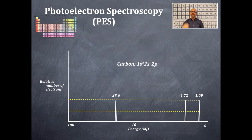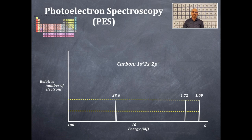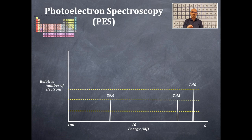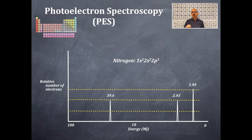Next is carbon: 1s2, 2s2, 2p2. Notice the height of all these peaks is 2. There's a shift in energy with the 1s2 electrons shifted closer to the nucleus — higher energy, harder to remove at 28.6 megajoules. The 2s2 and 2p2 are grouped together because they're relatively close in energy. Then nitrogen: 1s2, 2s2, 2p3. The peak at 39.6 is the 1s2 with a height of 2. The 2s2 is a peak of 2 at 2.45. The 2p3 has a peak of 3 at 1.4. There are five valence electrons, grouped together in terms of energy.